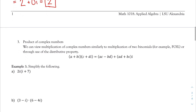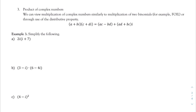Now let's talk about the product of complex numbers. The formal definition looks intimidating with all the letters, but the long story short is we're just multiplying two binomials — using the FOIL method: First times First, Outside times Outside, Inside times Inside, and Last times Last. You'll see more of what I mean in the examples.